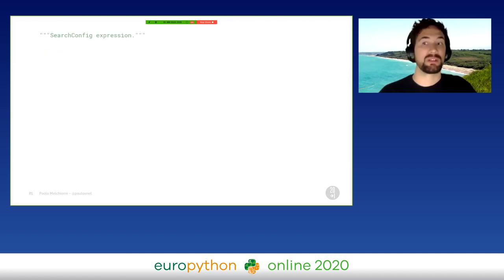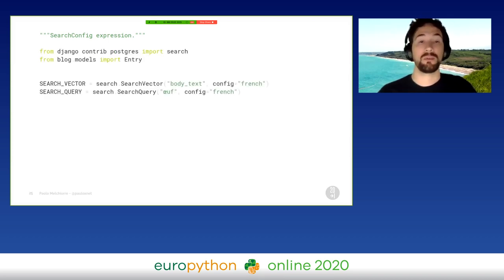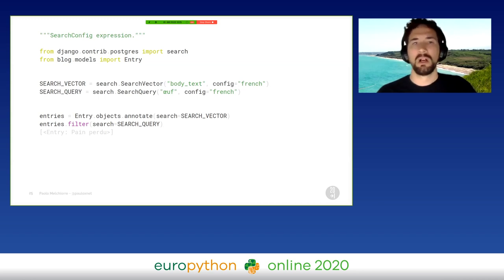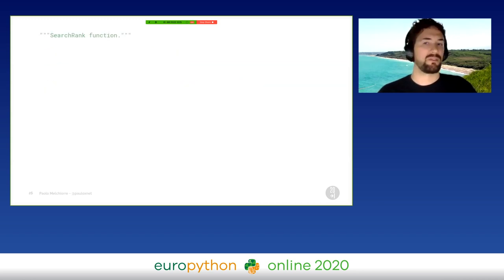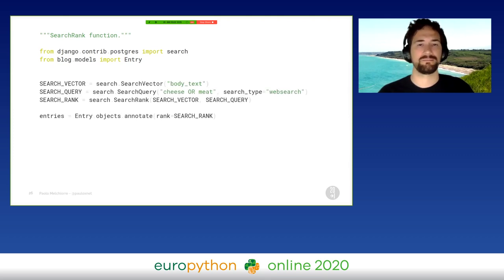To perform a full-text search in a specific language, we can use the search config expression. We can specify the language in both the document and the query. After that, we can have more precise results in the selected language. To list relevant results first, we can use the SearchRank function. Based on the query text and the document, Django can create a rank.